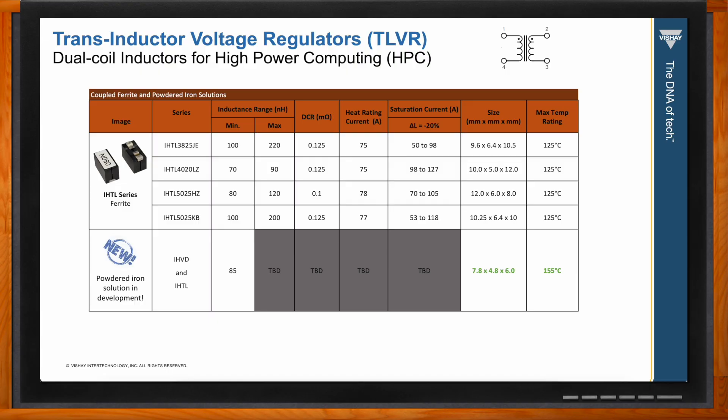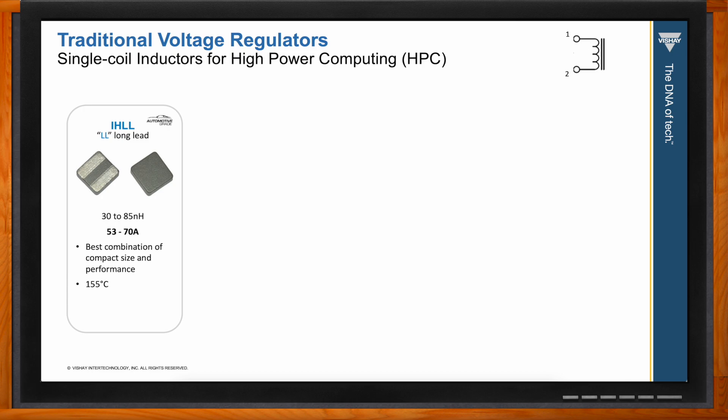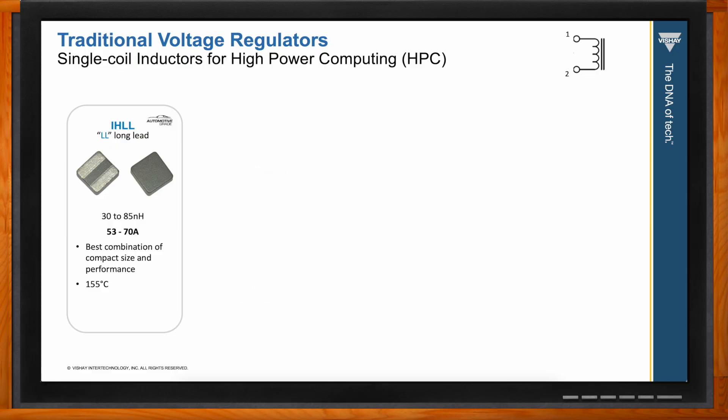For traditional voltage regulators using single-coil inductors, Vishay has quite a few options, mainly in composite construction. The IHLL family — LL standing for long lead — has the best combination of compact size and performance, with up to 155°C operation, going up to 85 nanohenries and 70 amps.